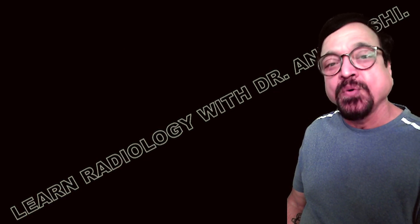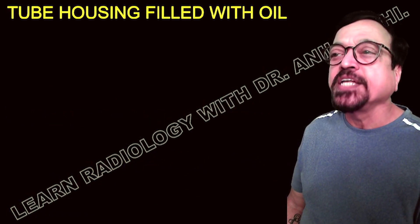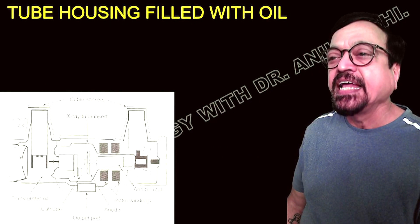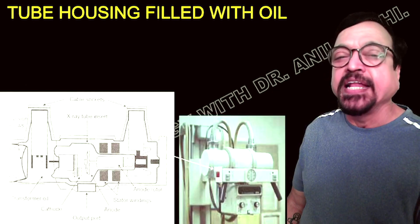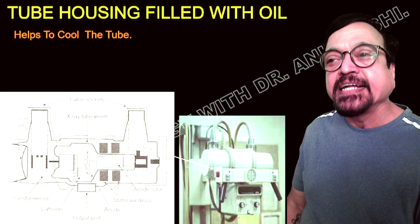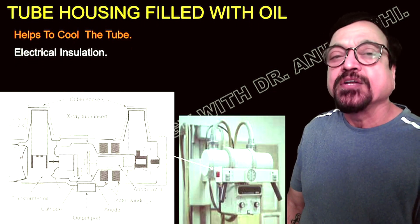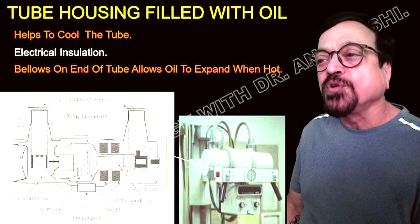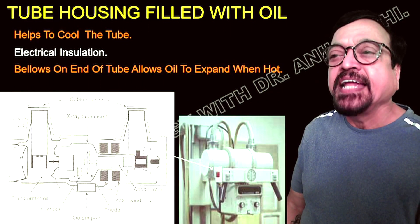The tube housing is also a heat protector. As mentioned, 99% of the energy is converted into heat and only 1% into x-rays. The tube housing is filled with oil. This oil dissipates the heat produced, helping to cool the tube. It also provides electrical insulation. At the end of the tube there is oil that expands when heated.